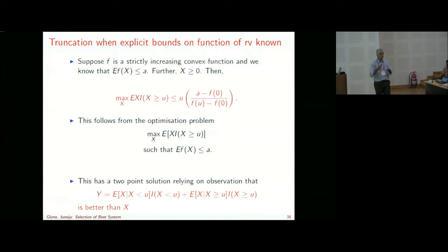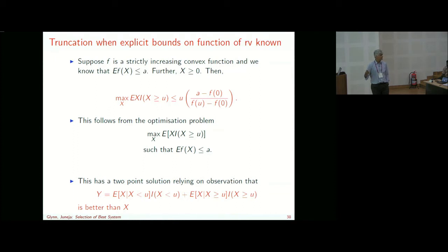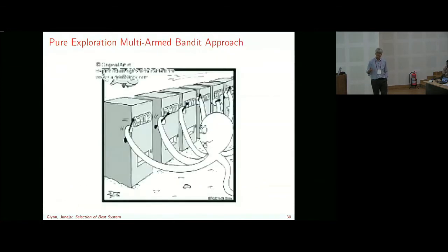Final question: would it improve things to complement the large deviation estimate for the probability of false selection with Gaussian correction terms instead of using the Cramér bound? Speaker: The negative result was very emphatic — it didn't depend on how the large deviation rate function was estimated, so that result still holds regardless.